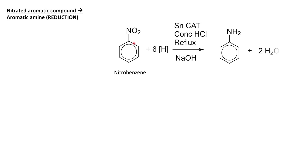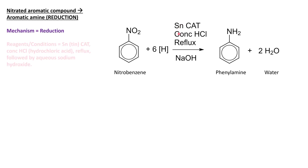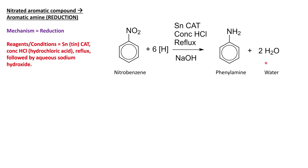A common follow-up reaction to nitration is reduction of the nitro group we just formed — that means converting it into an amine. Starting with nitrobenzene, which has the NO2 group, we can produce phenylamine, which has an NH2 group. This is reduction because it involves removal of oxygen or addition of hydrogen, shown as [H]. To perform this, we use a tin catalyst with concentrated hydrochloric acid, then reflux, and follow up in a second stage by adding sodium hydroxide solution, giving the aromatic amine and water as a by-product.